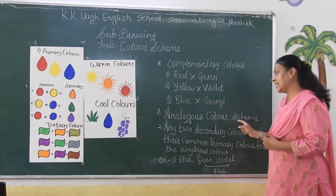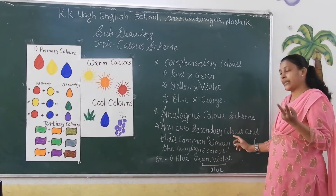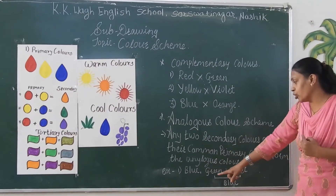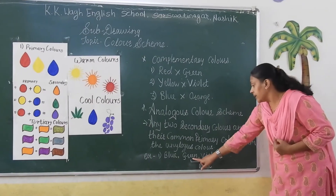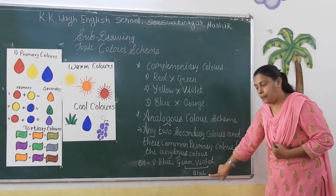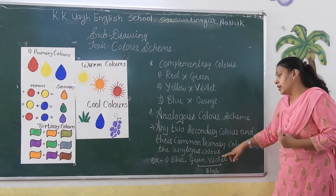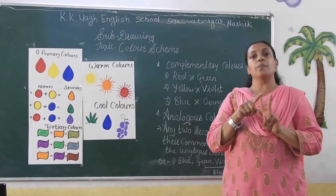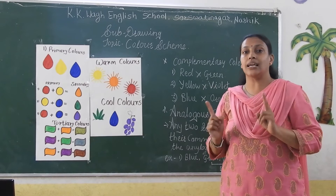Afterward, there is the analogous color scheme. In the analogous color scheme, we have two secondary colors and one primary color that they share in common. For example, blue, green, and violet — where green and violet are the secondary colors, and blue in the middle is the primary color they share. These are analogous colors.